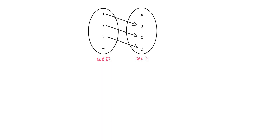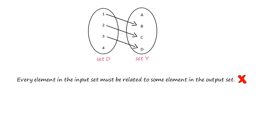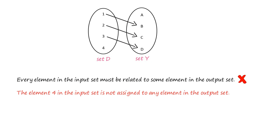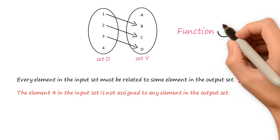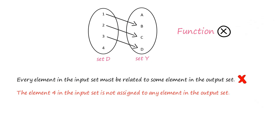Consider the sets D and Y related to each other as shown. Again, pause this video and try to figure out if this relation is a function. Clearly, every element in the set D is not related to some element in the set Y. The element 4 in the input set is not assigned to any element in the output set. So the given relation is not a function.